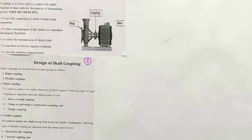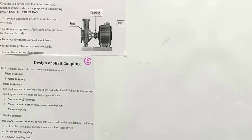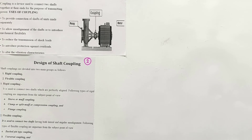In the case of rigid coupling, misalignment cannot be tolerated, but in flexible bush pin type coupling, misalignment is tolerable. Further roles include reducing transmission of shock loads, providing protection against overload, and altering vibration characteristics. When joining two shafts, vibration may occur, so flexible or bush pin type coupling is used to ensure smooth working.